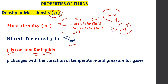If you consider gases, the density changes with respect to temperature and pressure. When you heat a gas, the density reduces because the volume of the gas increases while the mass remains the same. So for gases, rho changes with variation of temperature and pressure.